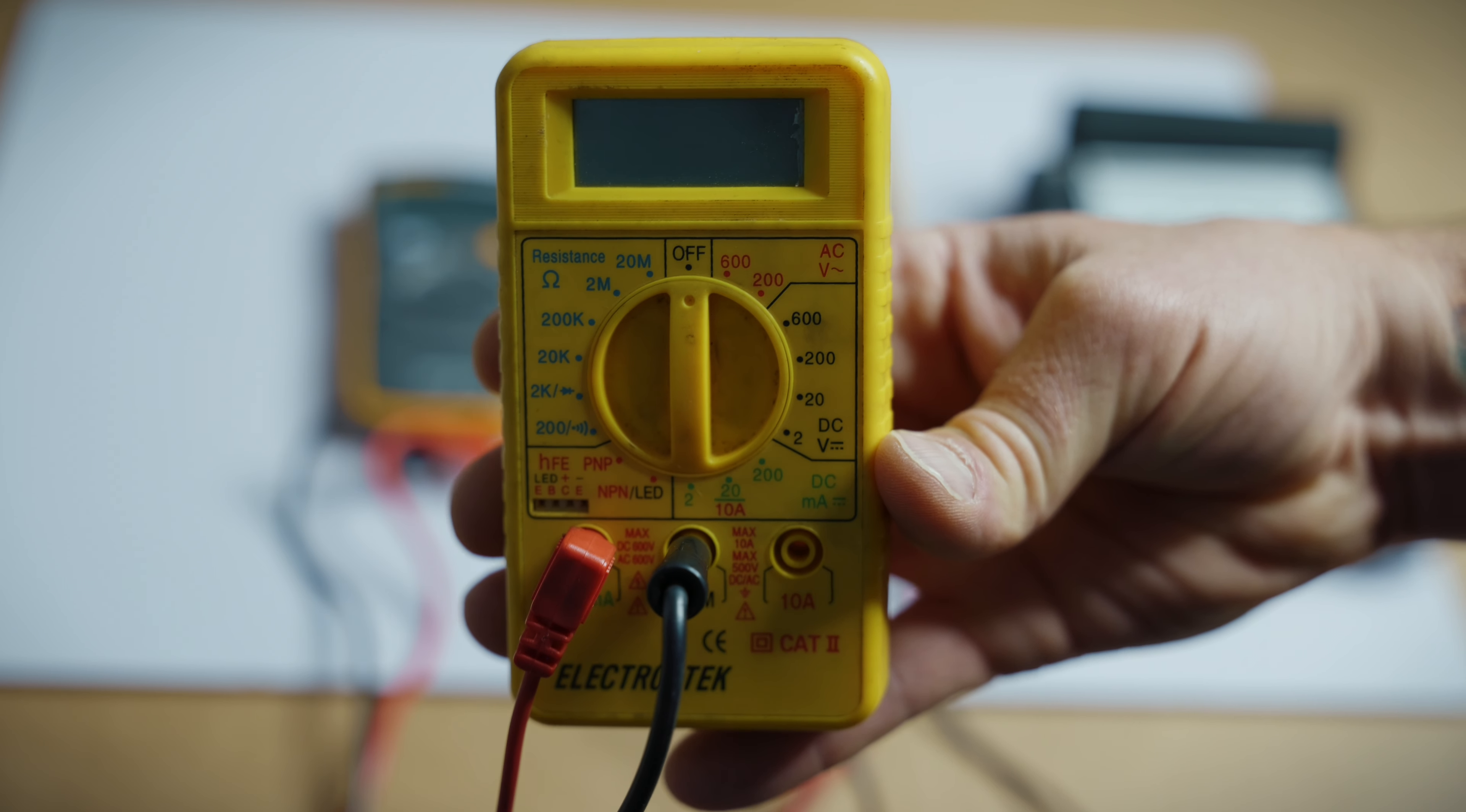Next up is your Fluke 101. It does have auto range. That's why you don't see all the numbers in between. The meter will auto range that for you. This one also has voltage, millivolts, resistance, diodes, frequency, as well as continuity.